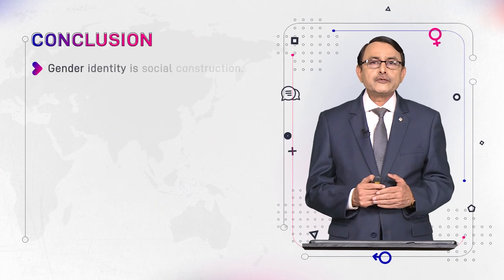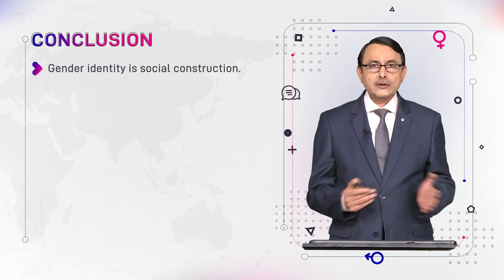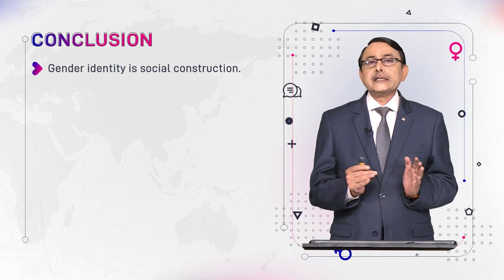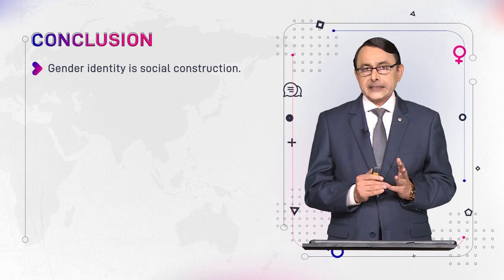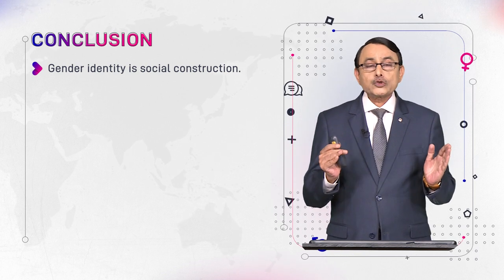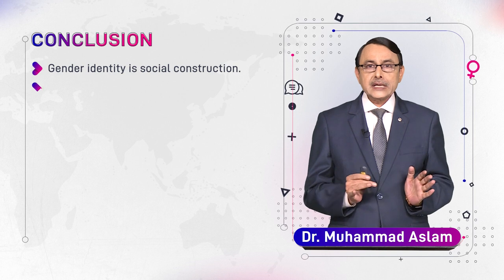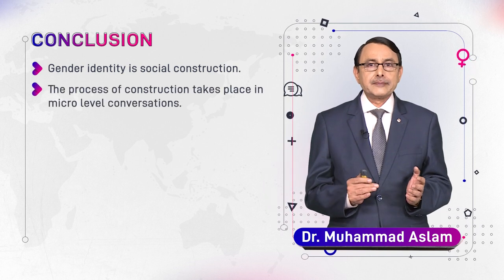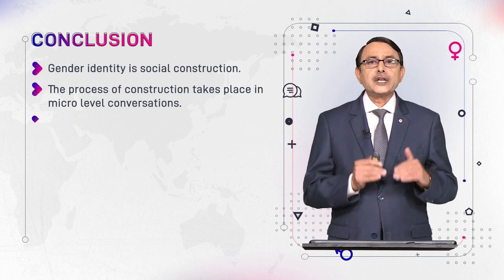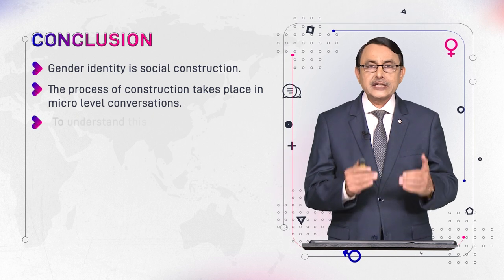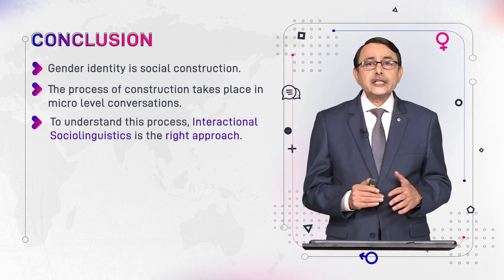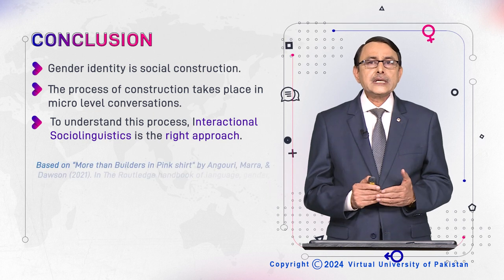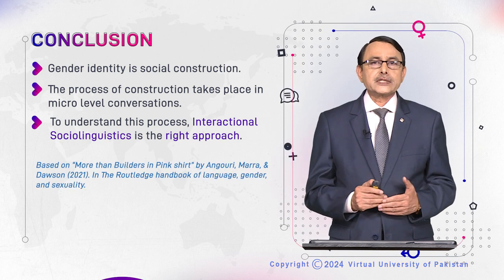We conclude from this whole explanation of interactional sociolinguistics that gender identity is a social construction. This construction takes place during real interaction, and this interaction is analyzed by using the interactional sociolinguistics procedure.